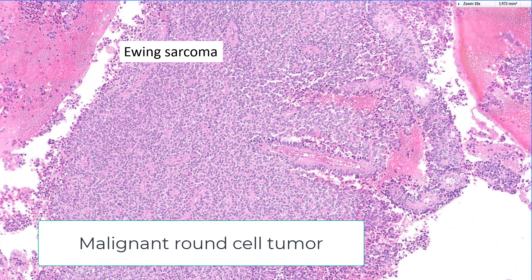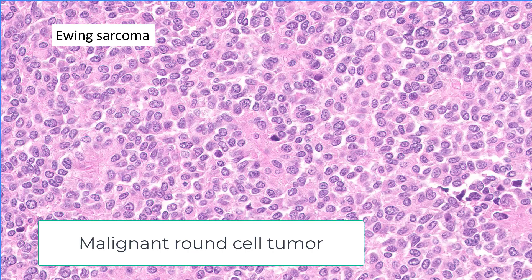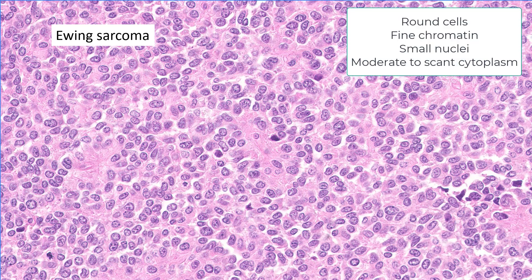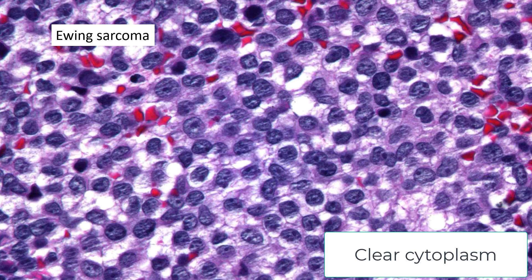This is a classic Ewing sarcoma — fundamentally a malignant round blue cell tumor with very monotonous nuclei and often some necrosis. It's a malignant round cell tumor with monotonous round to oval nuclei. Typically, you do not see prominent nucleoli. You'll see fine chromatin and a little bit of cytoplasm, which in this case is pale eosinophilic. That's classic, but there are variations on the theme.